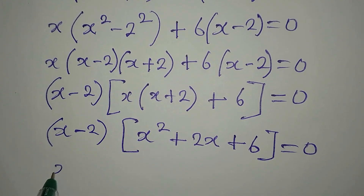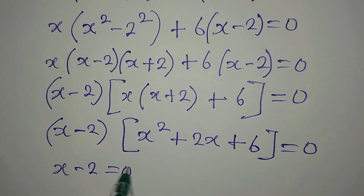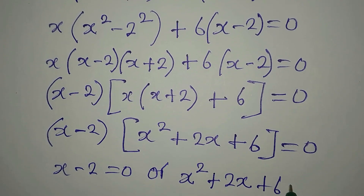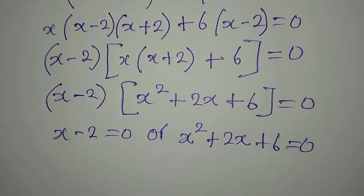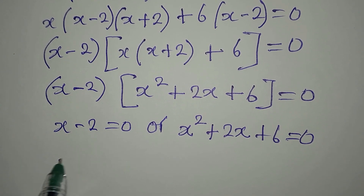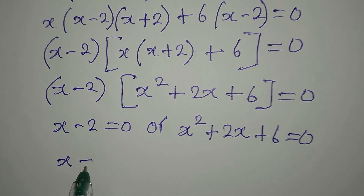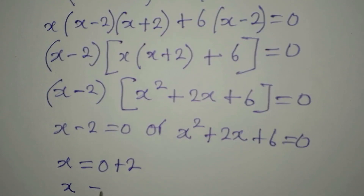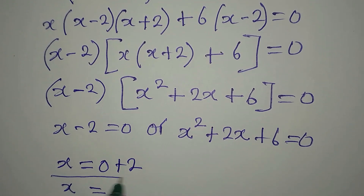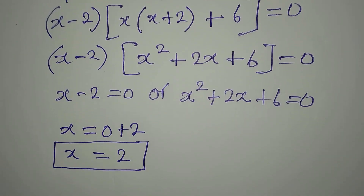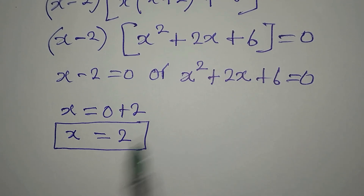Since we are multiplying two factors to get 0, either of them must equal 0. So x minus 2 equals 0, giving x equals 2. This is one of the solutions to the equation.